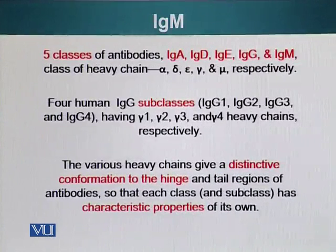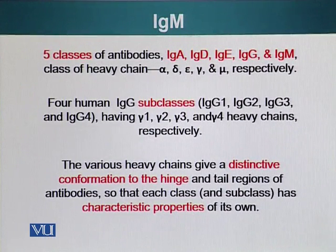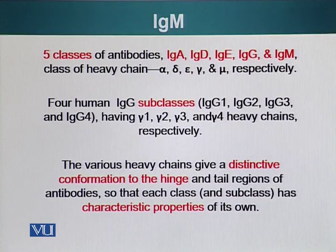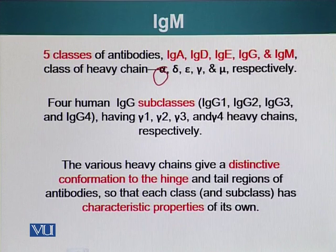The five classes of antibodies are IgA, IgD, IgE, IgG, and IgM. Their light chains are the same; the difference is in the heavy chains. IgA has the alpha chain, IgD has the delta, IgE epsilon, IgG gamma, and IgM mu.